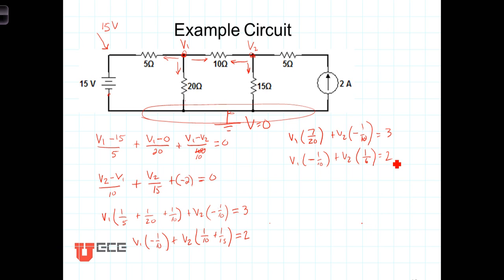Take that system of two equations and two unknowns, plug it into your calculator or your matrix solver, and when you do, you will get that V1 is equal to 14.48 volts and V2 is equal to 20.69 volts. From those two quantities we can calculate any other branch current or branch voltage in this circuit.